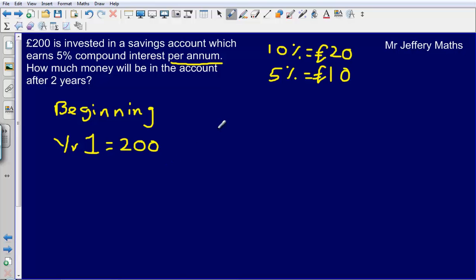So my interest that I earn at the end of year 1 would be £10. So that means that at the end of year 1 what I will have is the £200 that I started with plus the £10 on top of that. So at the end of year 1 I will have £210.